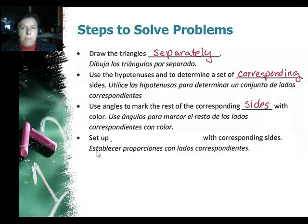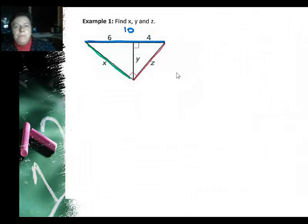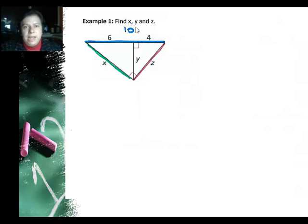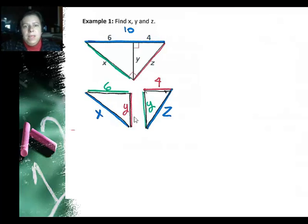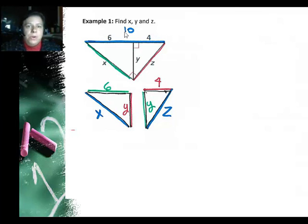Then you set up a proportion with the corresponding sides. In example one, I had six and four on the two small legs and added them together to represent the long leg, giving ten. I redrew the triangles: the big triangle in blue is ten, side Z is red, side X is green. Notice that X changes color because on the lower-left triangle, X is the hypotenuse, whereas on the original triangle, ten was the hypotenuse.